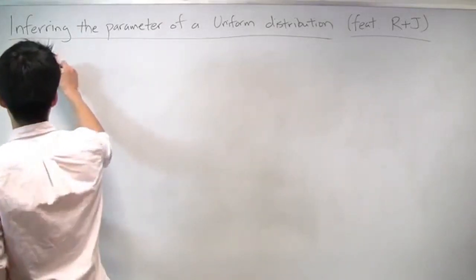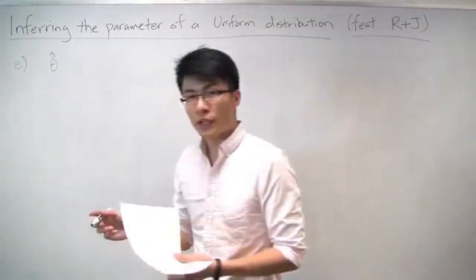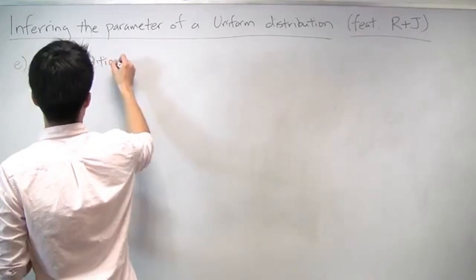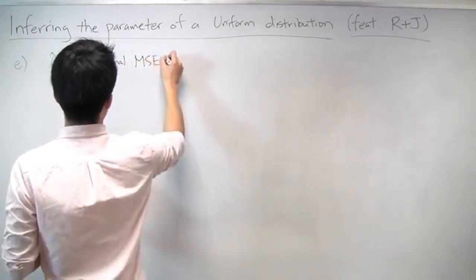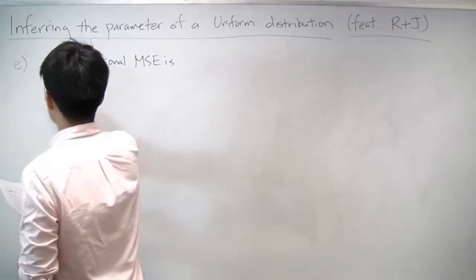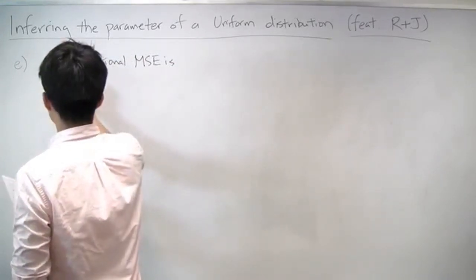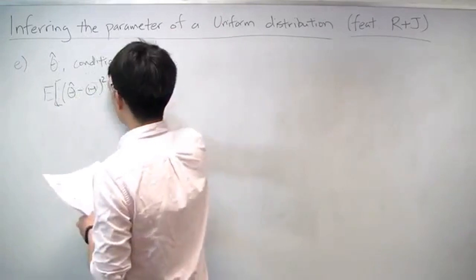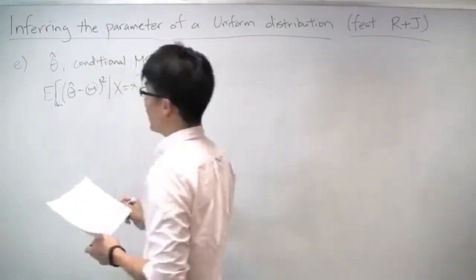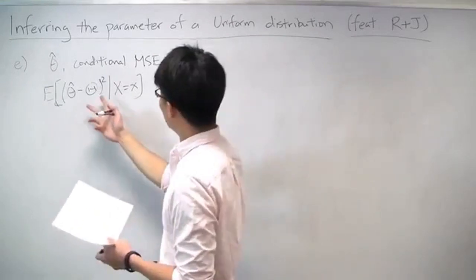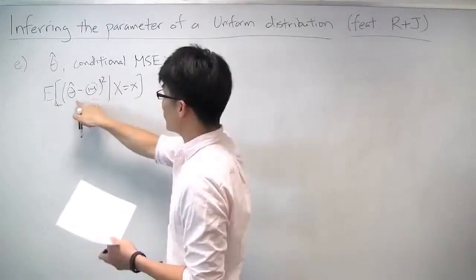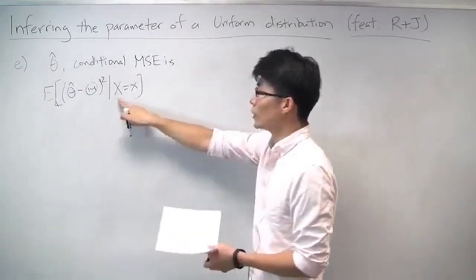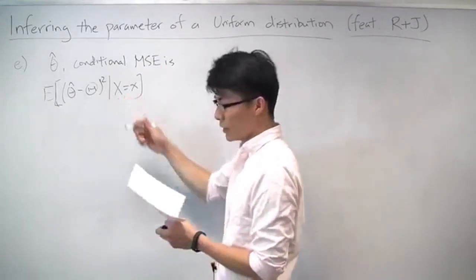Let's start out generically. For any estimator theta-hat, the conditional MSE — conditional mean squared error — is equal to the expected value of the estimator minus the actual value, squared, conditioned on x being equal to some little x. So you take the error, which is the difference between your estimator and the true value, squared, and then you take the mean. It's conditioned on what the data that you get is.